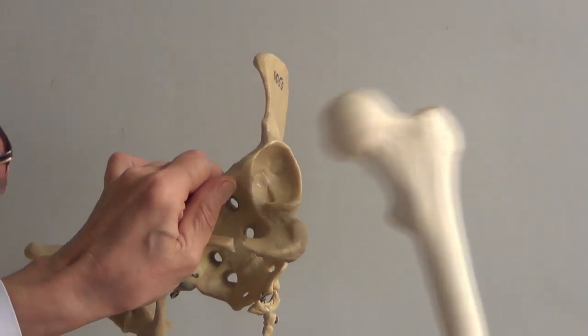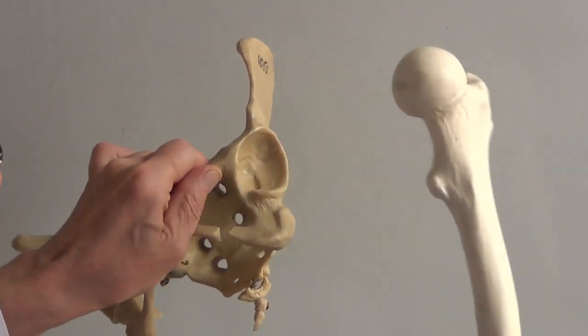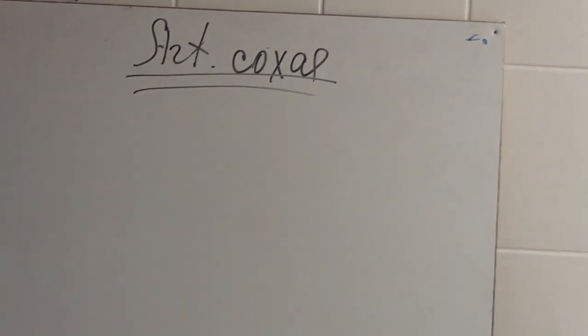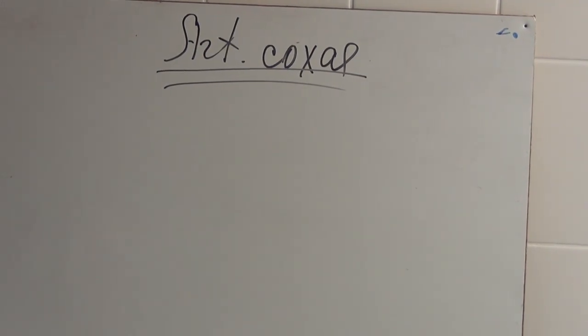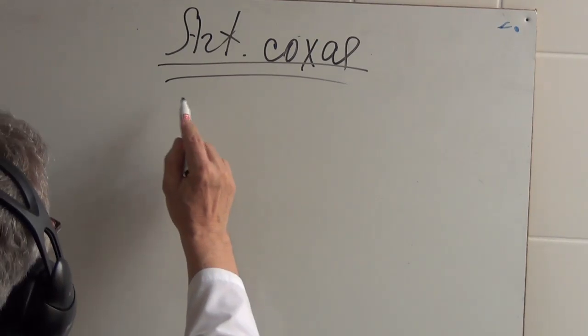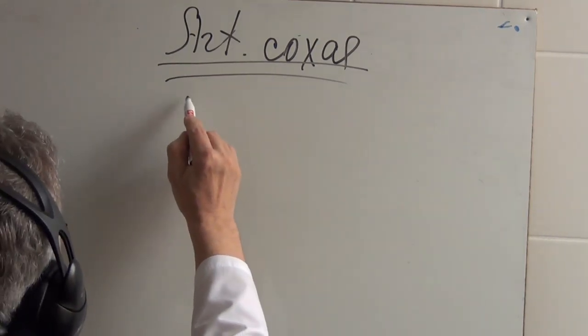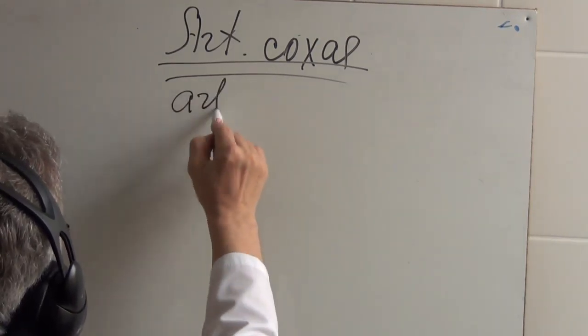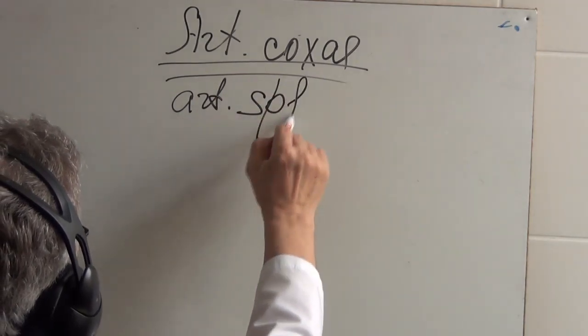First question we should ask ourselves is what is the geometrical shape of this joint? The geometrical shape is spherical, so it's a ball and socket joint. Articulatio spheroidea.